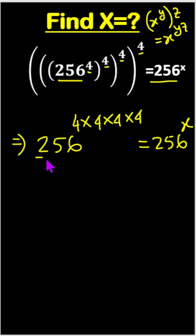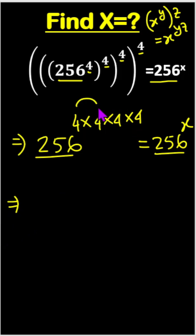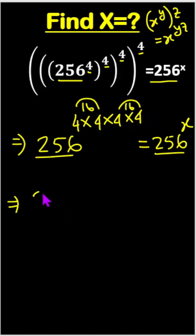Now look, the bases are the same. When bases are same, the powers will be equal. So 4 times 4 and 4 times 4 means 16 times 16, which is 256.